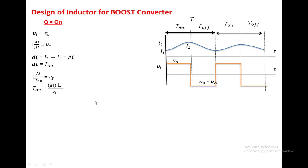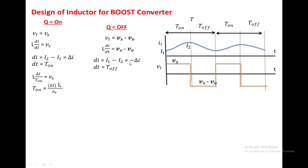In the same manner we are going to calculate when the switch is in the off state. Now Vl equal to Vs minus V0. Again this Vl we can write as L into di/dt equal to Vs minus V0. di is nothing but the change in current during the off state of the switch, that is I1 minus I2, which we can write as minus delta_i. The interval dt equals T_off. Substituting these two values: minus L into delta_i divided by T_off equals minus of V0 minus Vs. Here the minus signs cancel, giving T_off equal to delta_i into L divided by (V0 minus Vs).